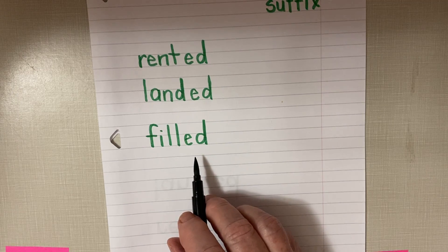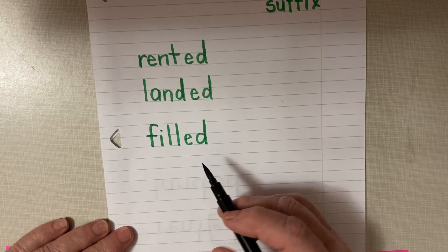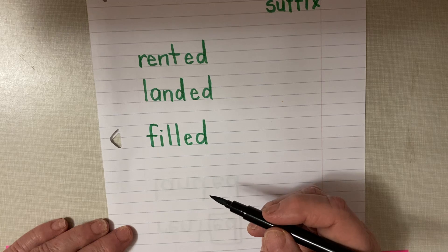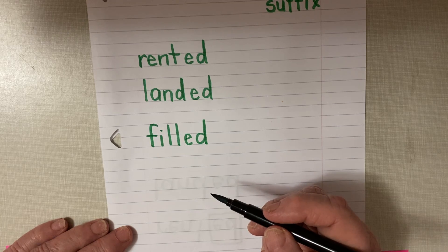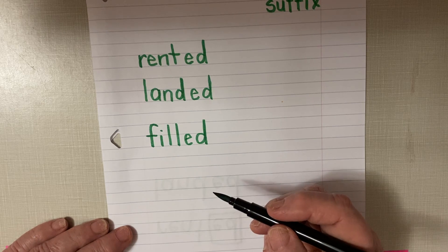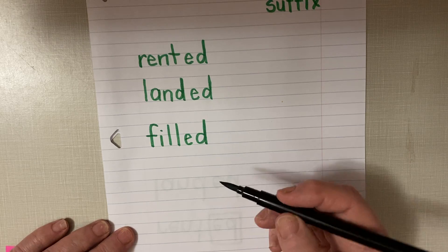When the suffix -ed is added to a base word that does not end in a t or a d, the suffix does not add a syllable. Instead, it adds the sound d or the sound t. So it can sound like d or t at the end of a word.